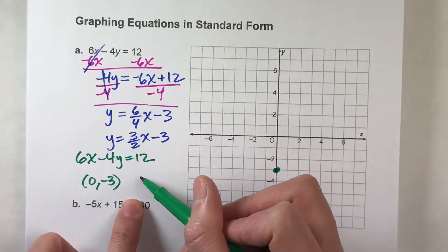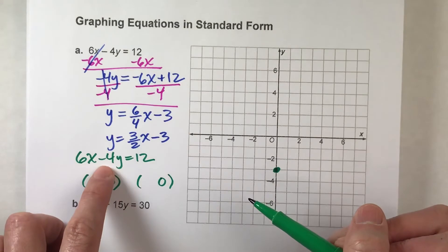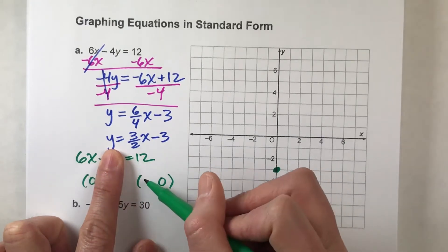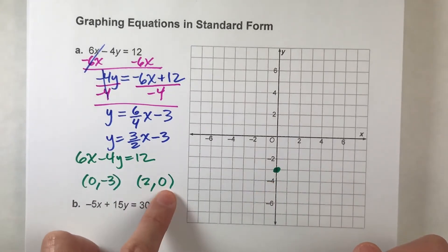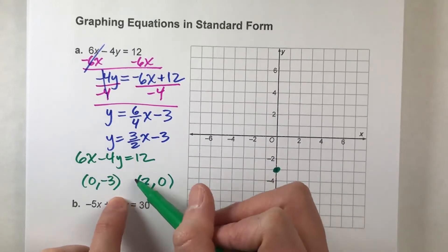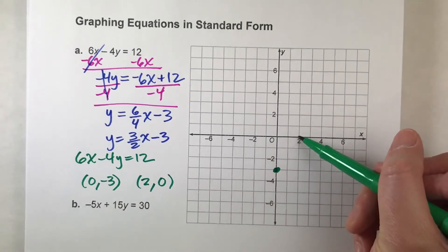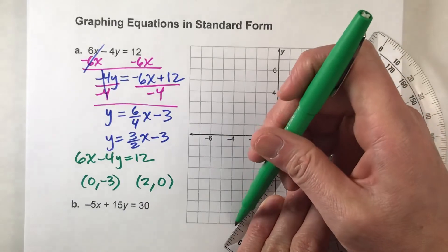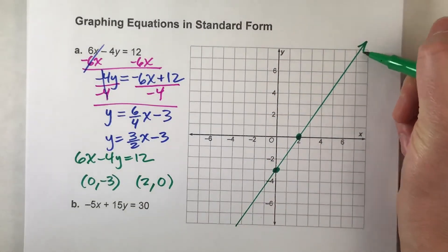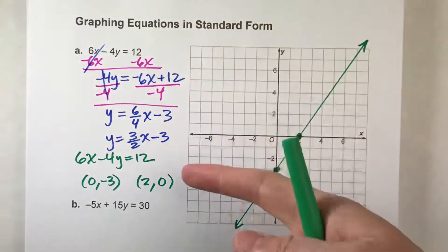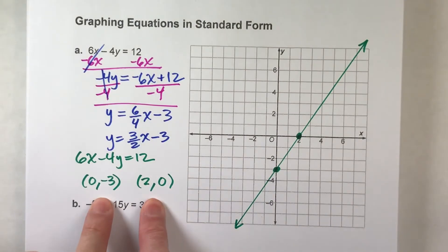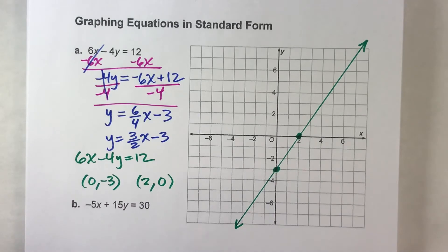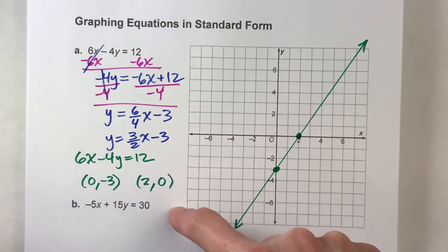Now, what if y was 0 instead? If y is 0, then negative 4 times 0 is 0, so I'm left with 6 times what equals 12? Well, 6 times 2 equals 12. So x equals 2 when y is 0 — the point (2, 0) is also on the line. Now that we have two points, we know exactly where the line is, and we can draw it. When working with equations in standard form, it's often easier to just find the x and y-intercepts — it saves a bunch of time on algebra and gives you two points to draw a line through. Although sometimes converting to slope-intercept form is faster if the intercepts don't end up being whole numbers.